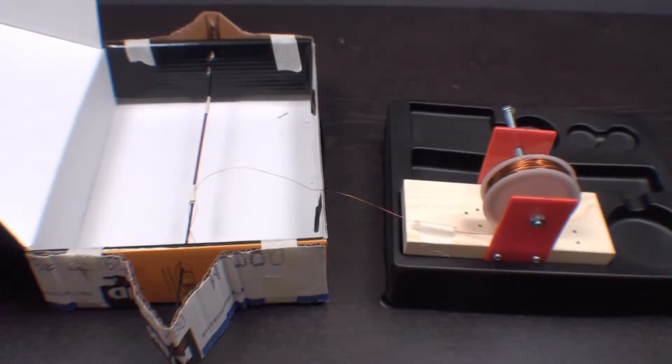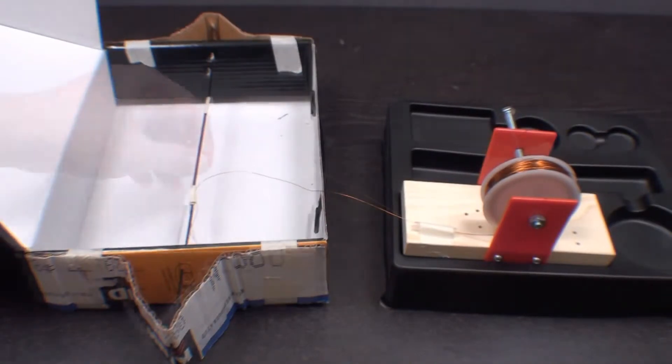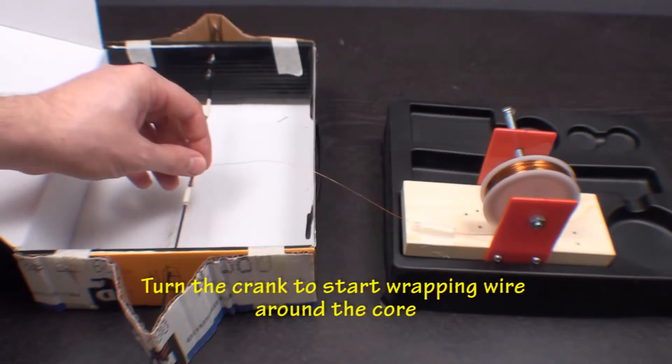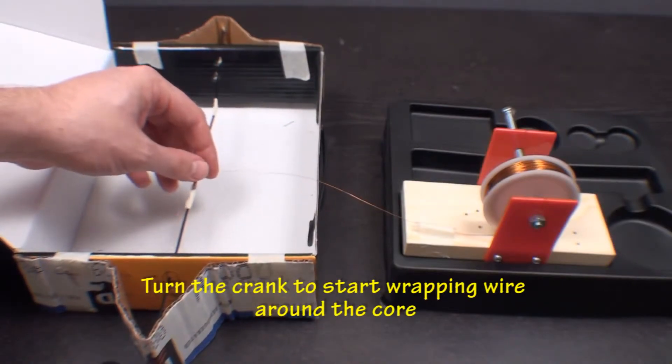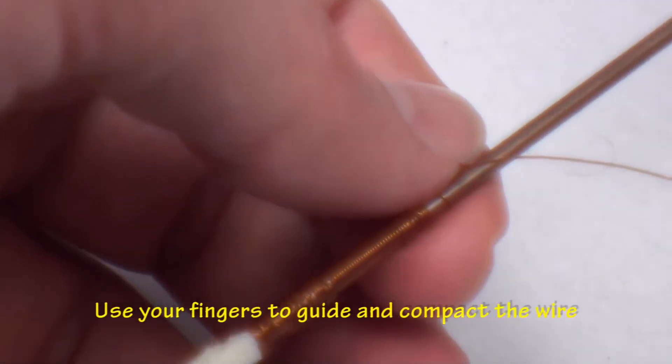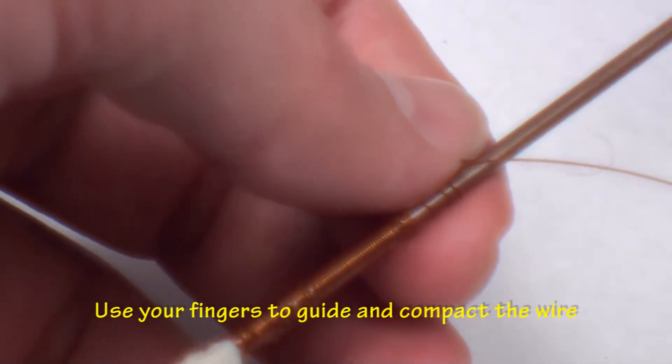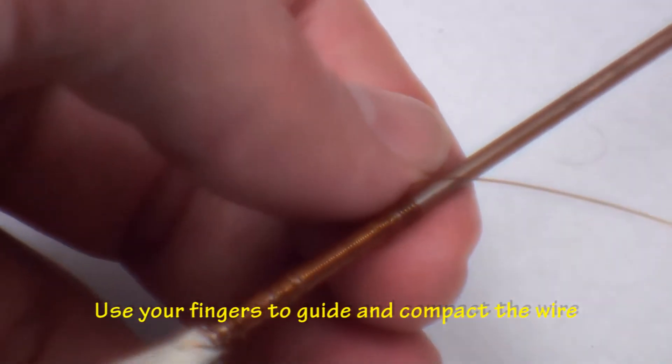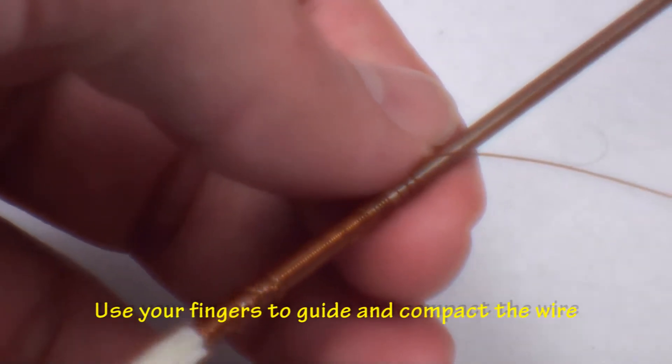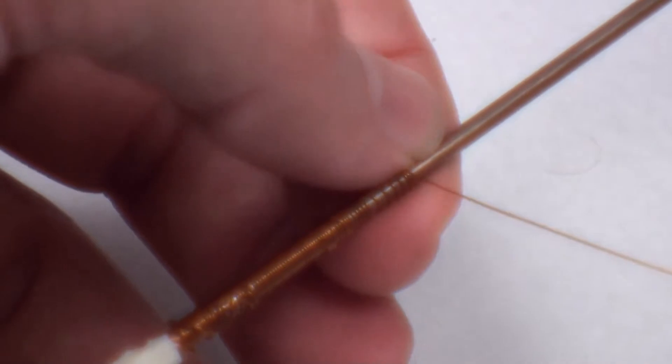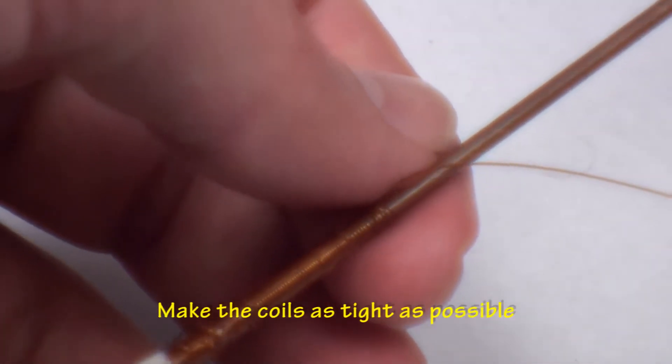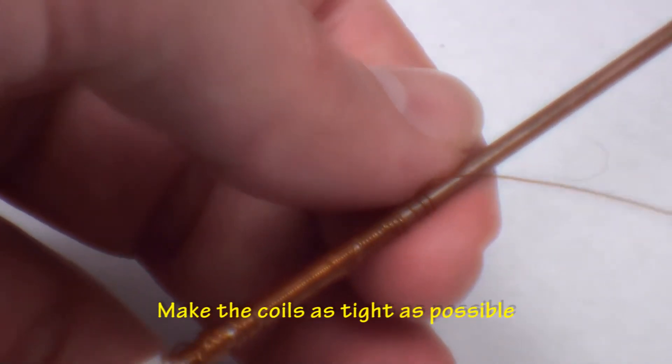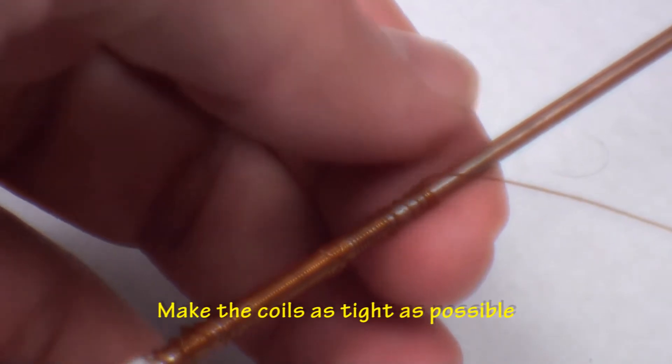This setup will help to ensure an even unspooling of the wire. Start turning the crank and winding the wire around the core slowly. Use your fingers to guide the wire. Stop every fifth or so turn and push the wire together into a tighter coil. Take your time with this. A successful project depends on getting as many windings in a small space as possible.